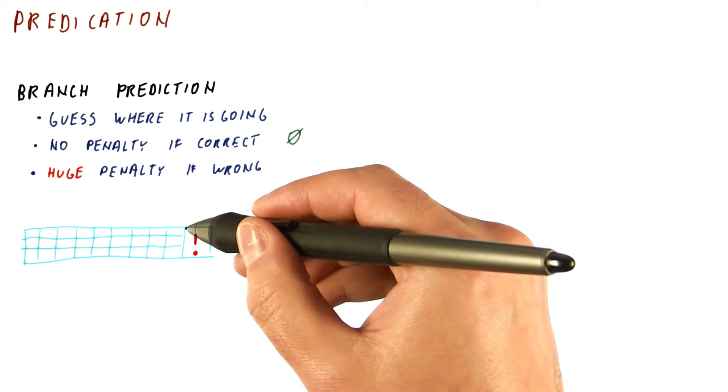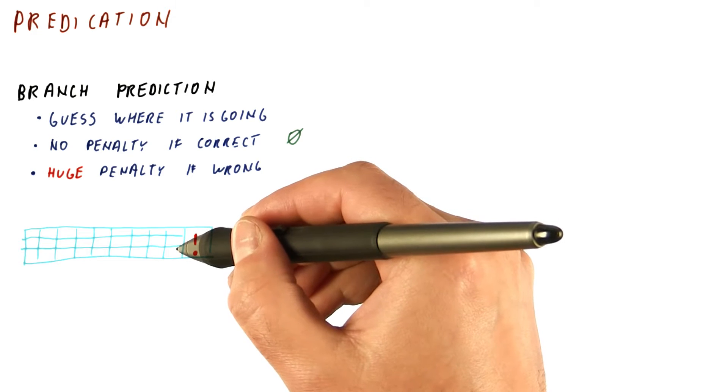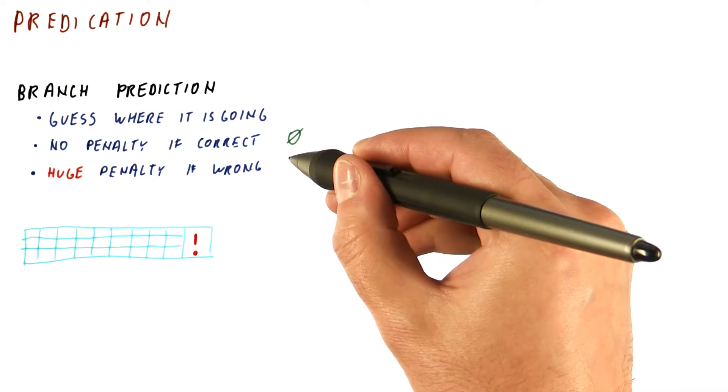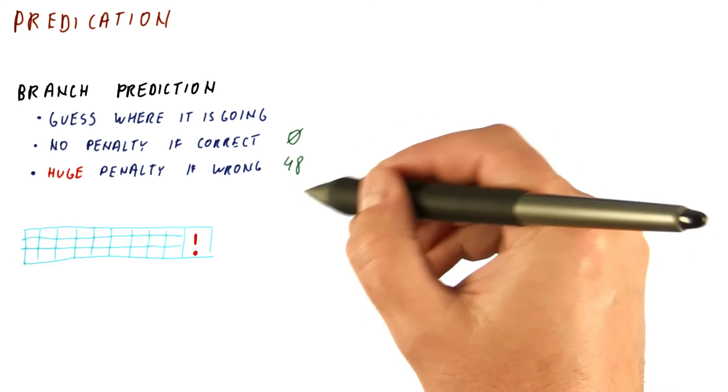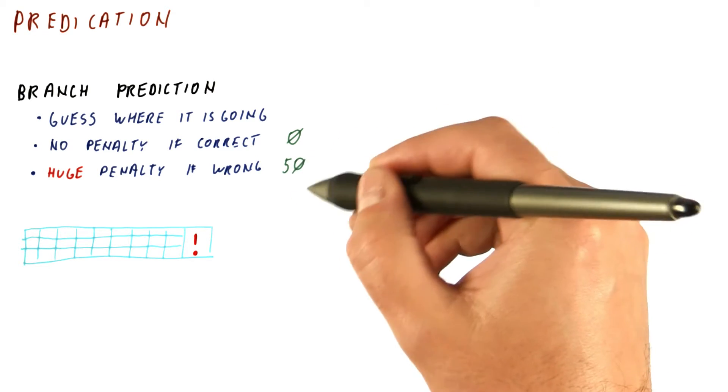And if we have something like maybe a 12 stage pipeline with four instructions per cycle, we're talking about something like 48 possibly instructions or so. So let's say about 50 instructions worth of work wasted.